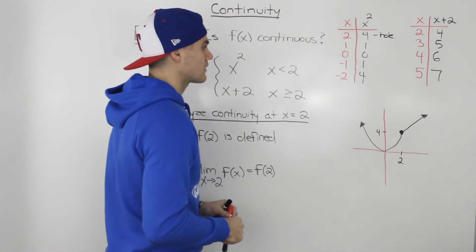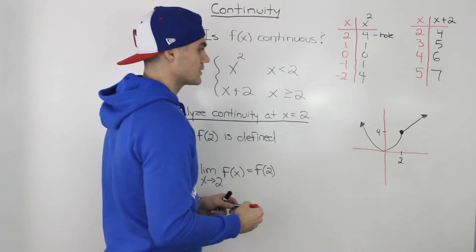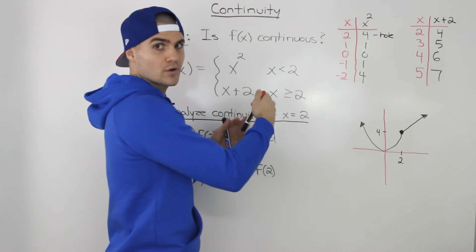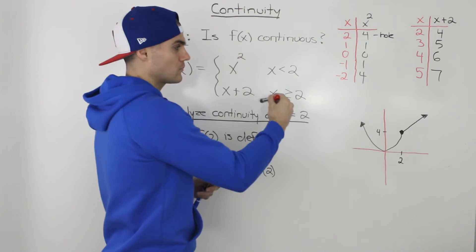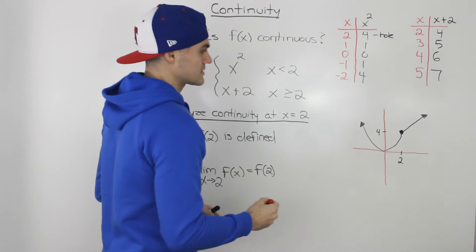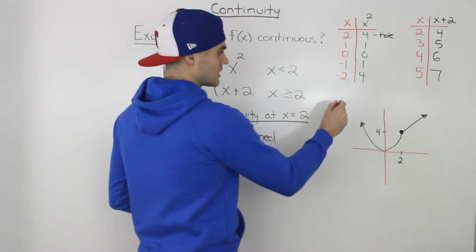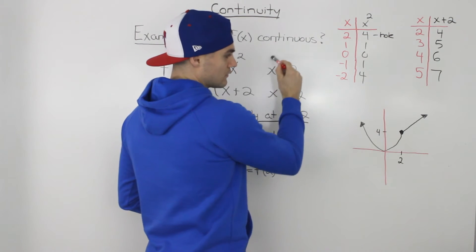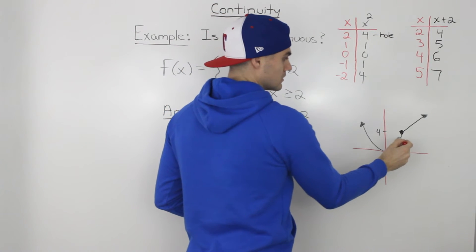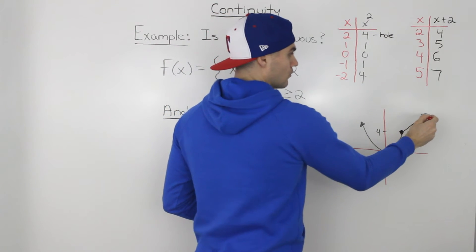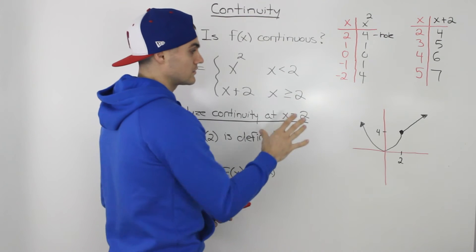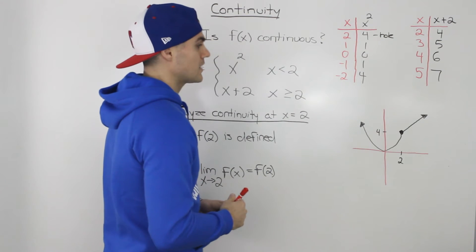That's another good way to think about continuity: if you can run through the whole function with a pencil without lifting it off the paper, then it's continuous. From negative infinity, we can run through this whole function all the way to positive infinity without taking the pencil off the paper.